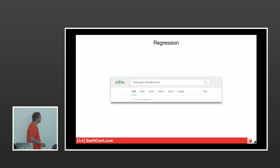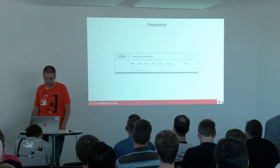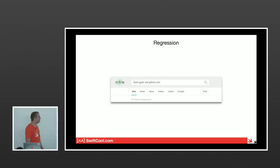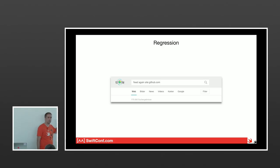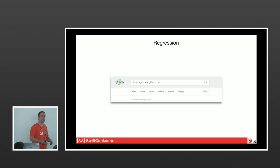When you search for 'fix again' on GitHub, you get 175,000 results — people putting 'fix again' in their commit messages. This means they had working code, did something to it, and it broke. I've seen this myself. If you have a unit test that ensures a bug doesn't come back, you won't see that bug again as long as you run your tests regularly.